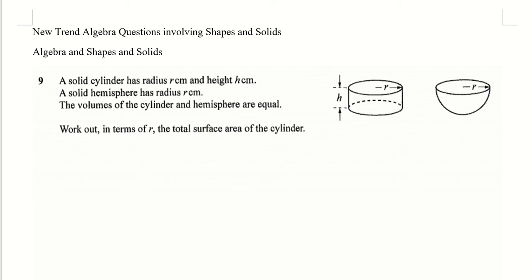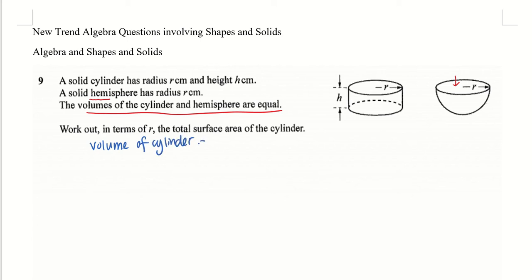So if I have a cylinder and I have a solid hemisphere, the key word is hemisphere. So we must remember to have half if you are looking for the volume. If you are looking for surface area, there will be an additional circle. So the volumes of the cylinder and hemisphere are equal — this statement is for you to form an equation. The volume of the cylinder equals the volume of the hemisphere.